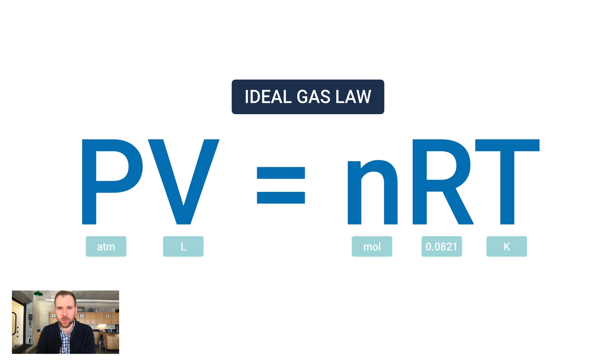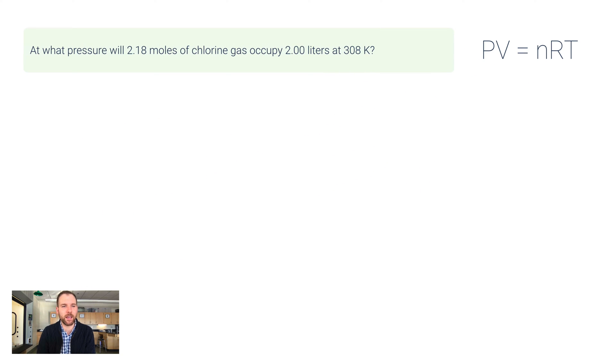So let's do a couple of these example problems. This one says, at what pressure, so we're looking for P, will 2.18 moles, so there's n, of chlorine gas occupy 2 liters, there's the volume, at 308 kelvins, so that is temperature. I started easy. We don't have to convert any of these. This is already in moles, this is liters, this is kelvins, so we're just solving for pressure and our resulting unit will be in atmospheres. Let's start with PV equals nRT. I want to rearrange this for P, so if I divide both sides by V I get nRT over V. That's what P is equivalent to.